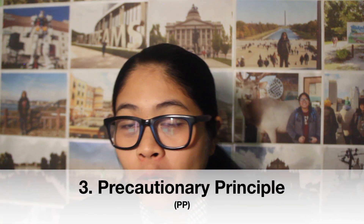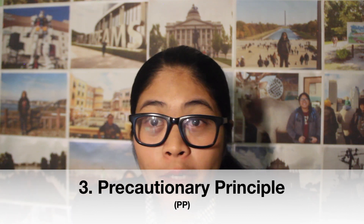The third environmental management principle is the Precautionary Principle, or PP. This principle ensures that a substance or any activity posing a threat to the environment is prevented from adversely affecting the environment. So even if there is no conclusive scientific study of a certain activity, but if there is a possibility that the environment could be damaged, then you have to be cautious and take precautionary measures.